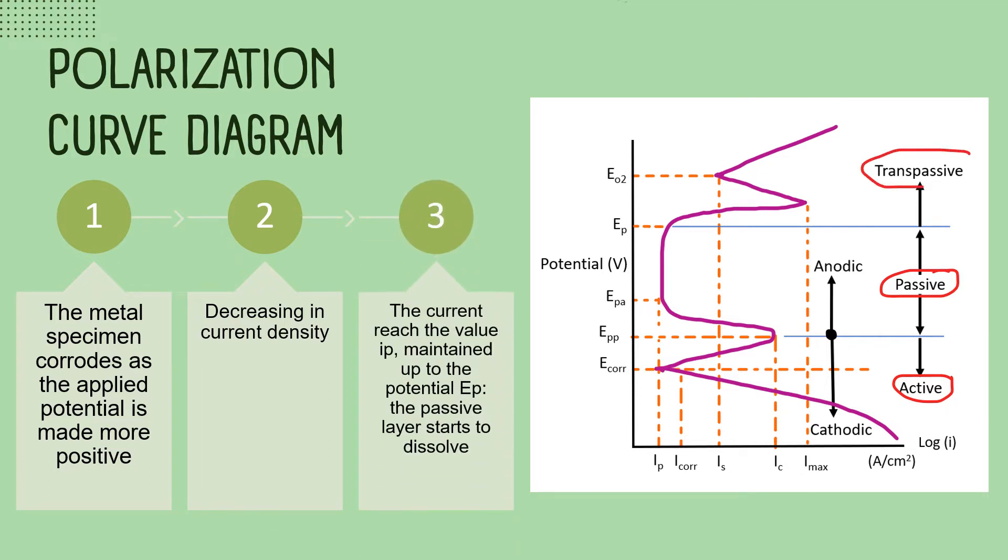Lastly, in the transpassive region, the current reaches the value IP maintained up to the potential EP. The passive layer starts to dissolve and the transpassive region begins.